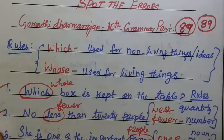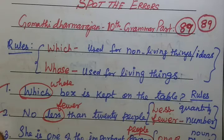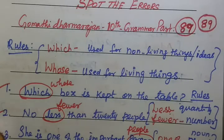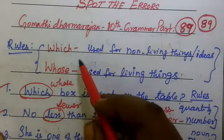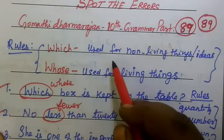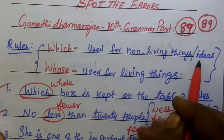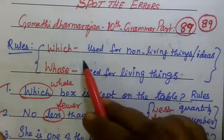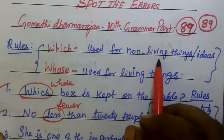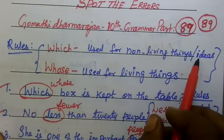Good evening to all. Today we want to see part 89, Sparth Error. You see the first one: 'which' is used for non-living things and ideas.